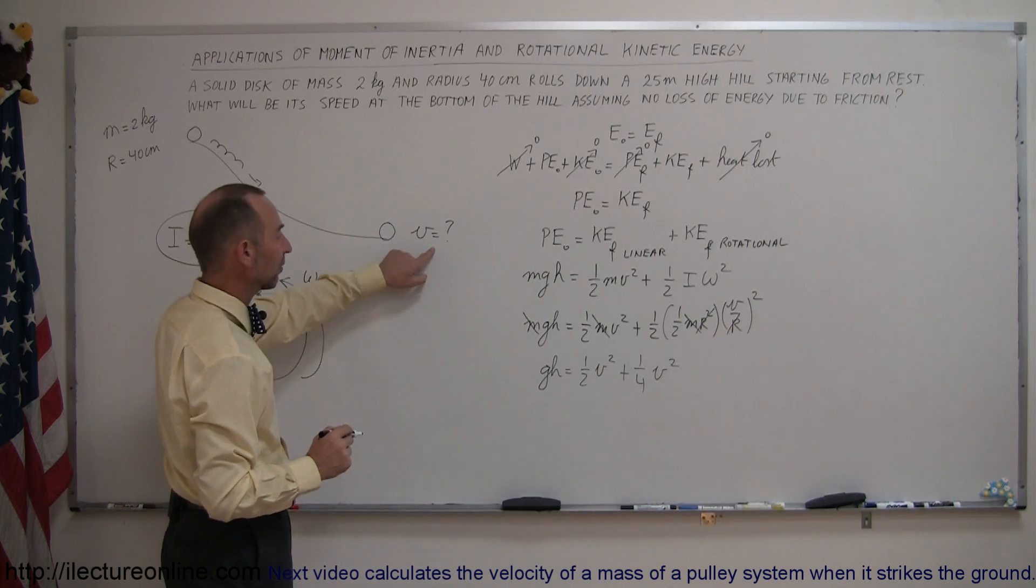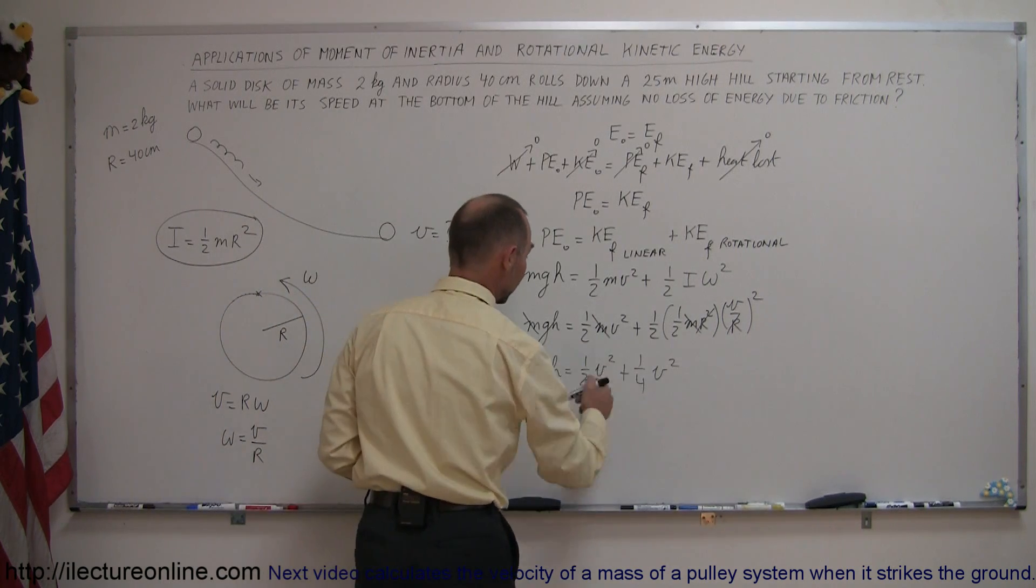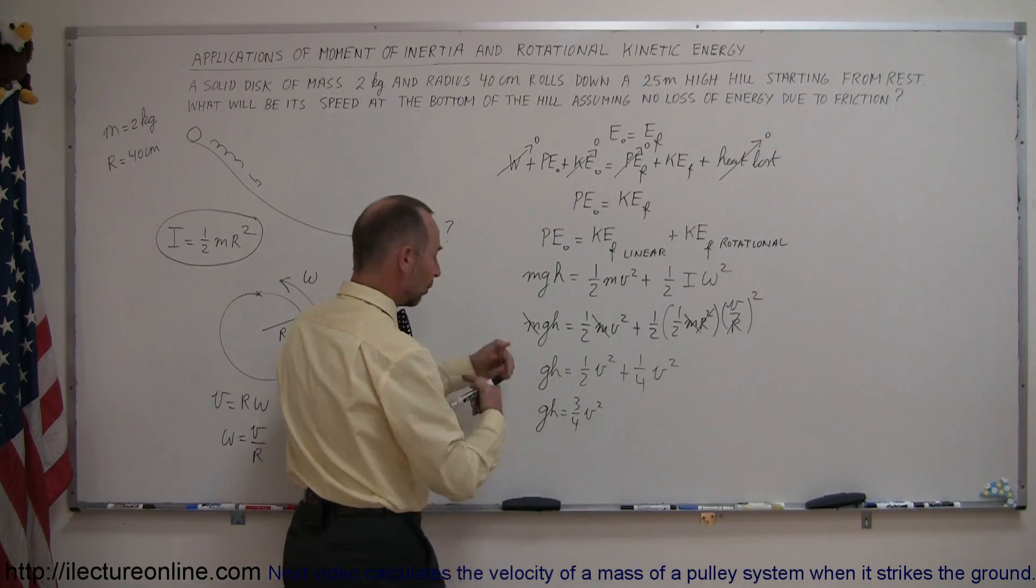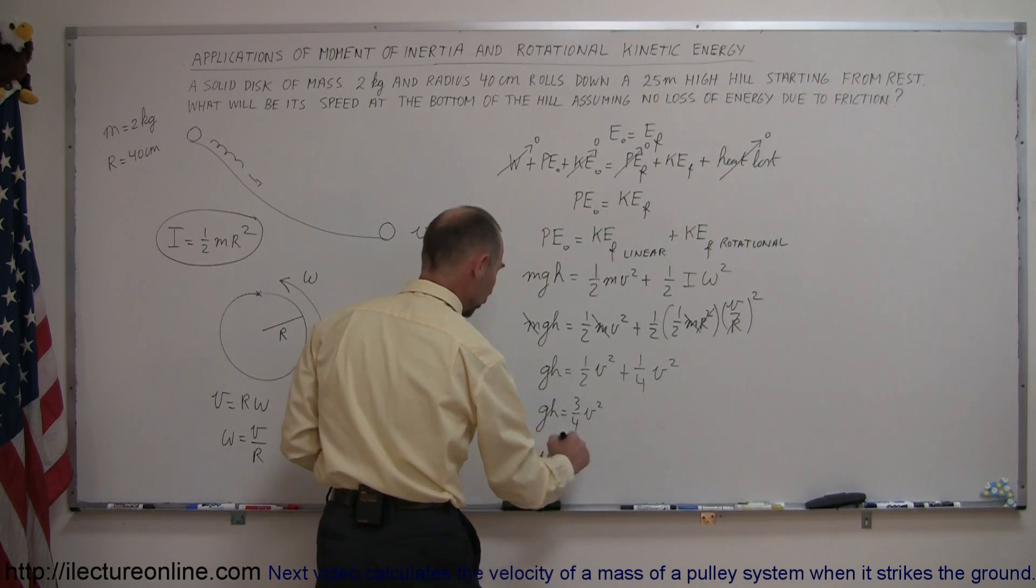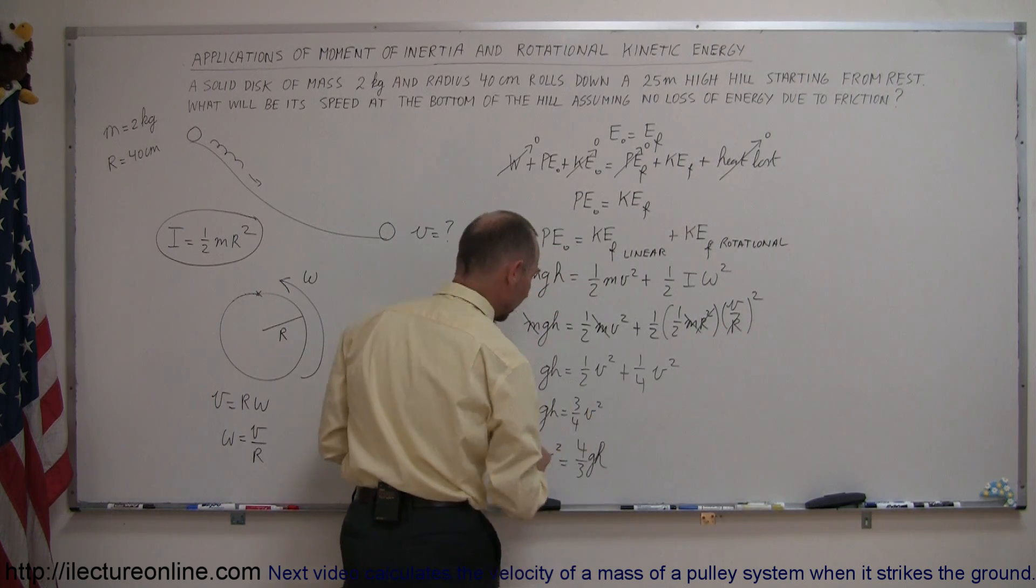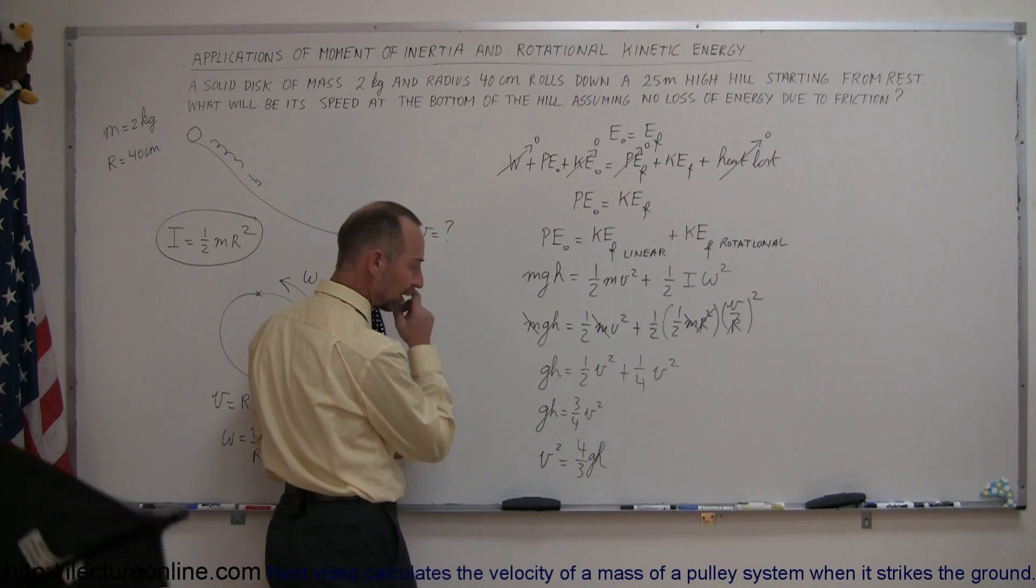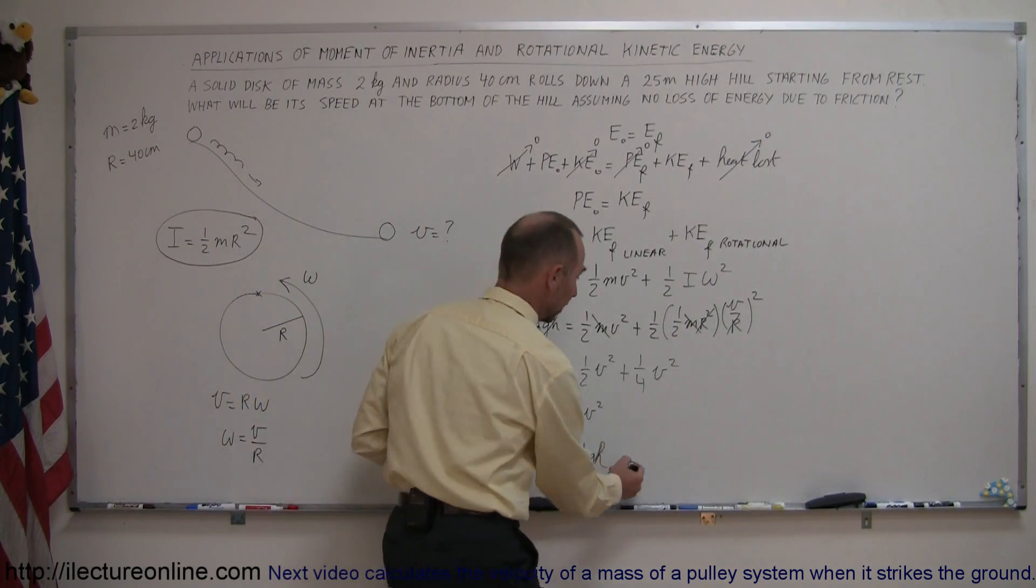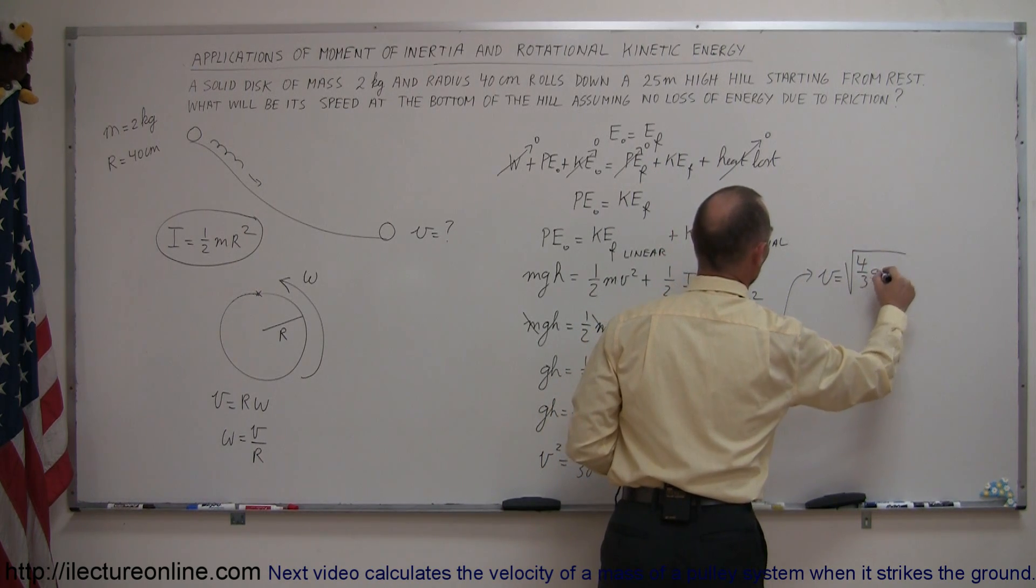And since we're looking for the final velocity, we have to solve this equation for v. So combining those two terms, one-half plus one-quarter is three-quarters, so gh equals three-quarters v squared. Changing the equation around, we can say v squared equals four-thirds gh. So what I've done now is I've turned the equation around and multiplied both sides by four-thirds to get rid of the three-quarters on the left side. I'll end up with four-thirds on the right side, and then taking the square root of both sides, I can say that velocity equals the square root of four-thirds gh.